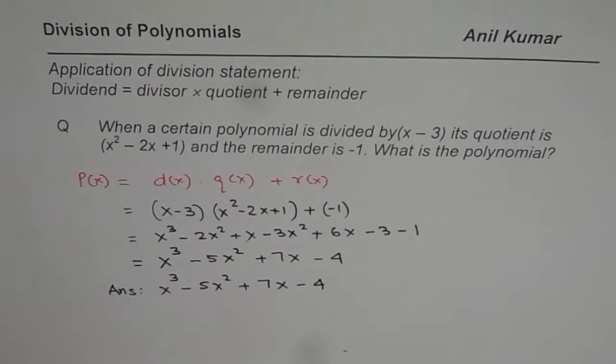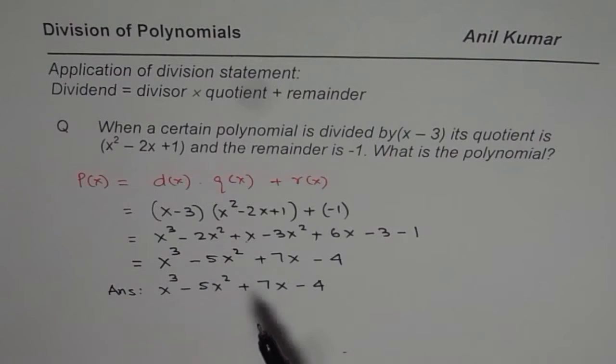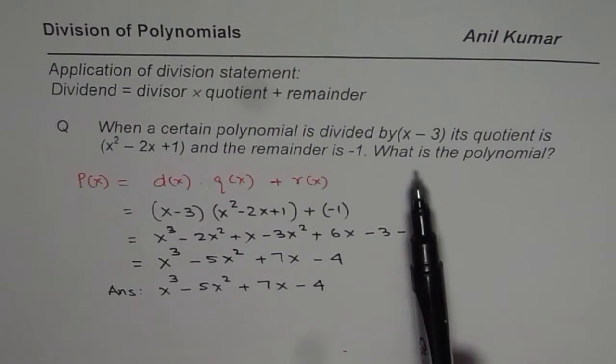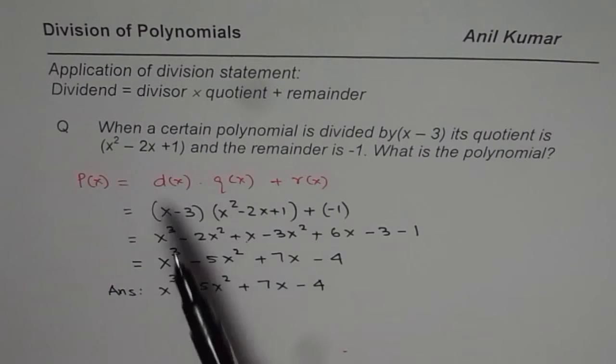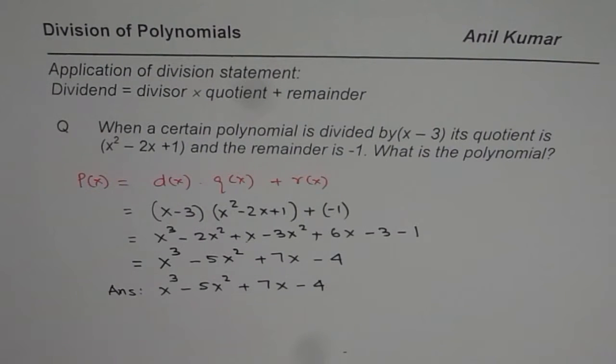So that is how you should be solving such questions. Now as a practice question, you could now do the reverse. Divide this polynomial by x minus 3 and check if you get the required quotient and remainder. I hope that helps. Thank you.